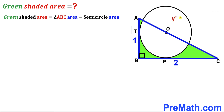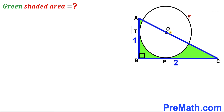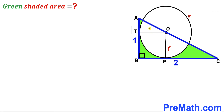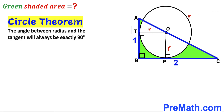We are going to calculate the radius of this circle, labeling it as lowercase r. I'm going to connect center O with point P, and likewise connect center O with point T. OP and OT are radii of the same circle, both labeled r. Recalling the circle theorem: the angle between the radius and the tangent line is always 90 degrees, so these angles at P and T are both 90 degrees.